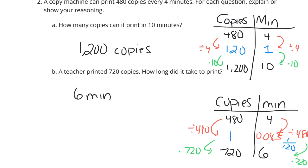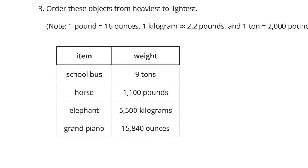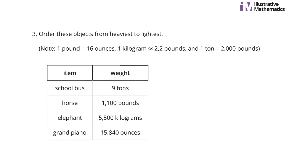Continuing on. Question 3. Order these objects from heaviest to lightest. Note, 1 pound is 16 ounces. 1 kilogram is 2.2 pounds, and one ton is 2,000 pounds. Our goal here needs to be to get these all to be the same unit. So whether you want to get these all into pounds, all into ounces, all into kilograms, all into tons is kind of up to you. I prefer to get these kind of towards that middle unit and in this case I'm going to get it to be all in pounds. That's the method I'm going to use.